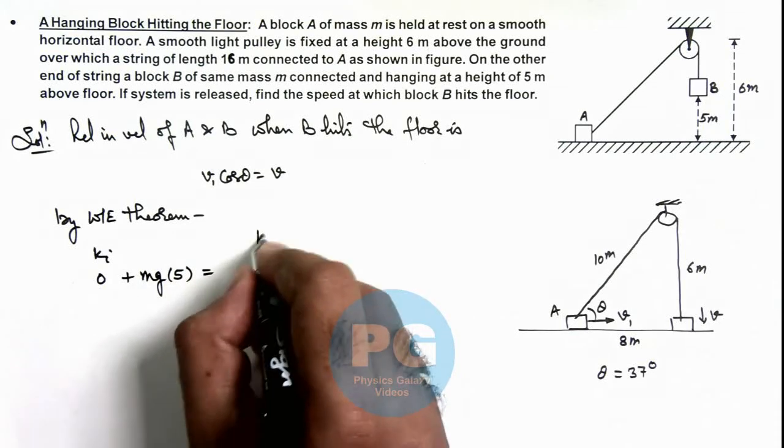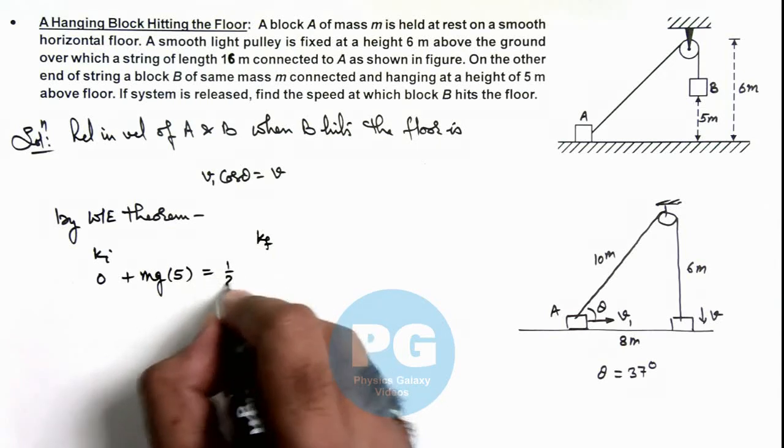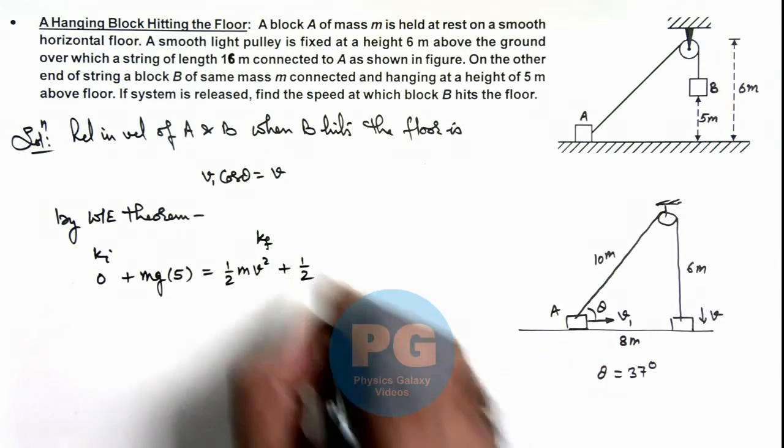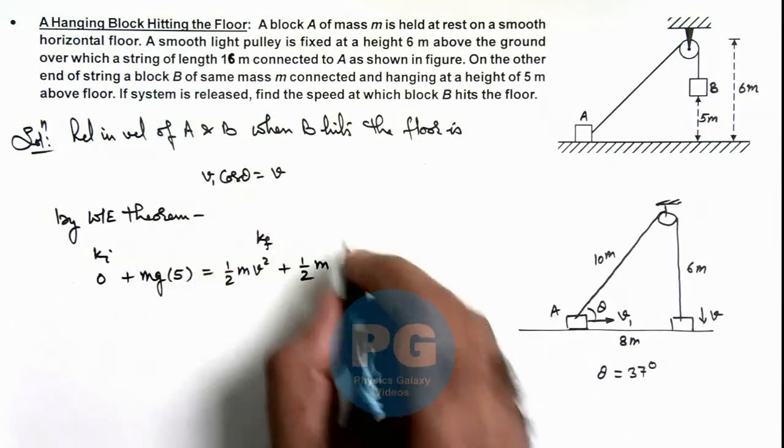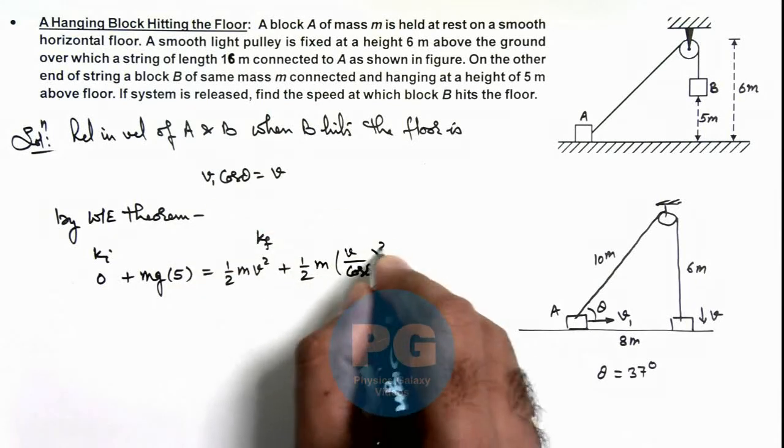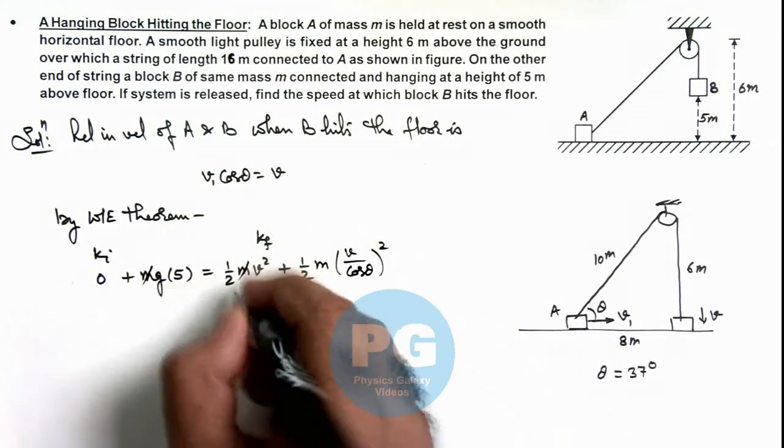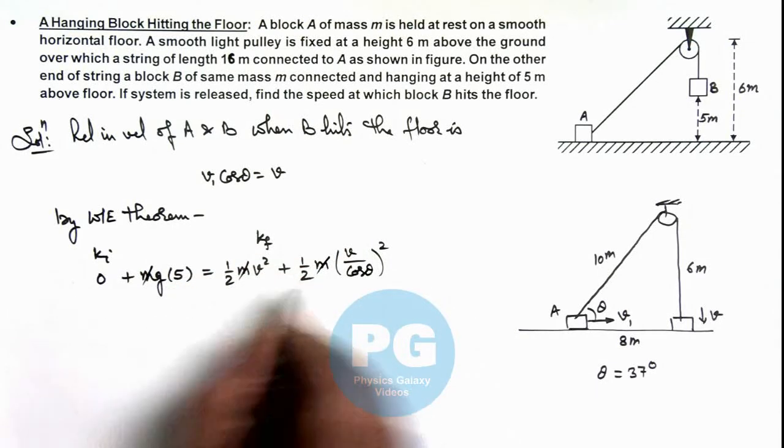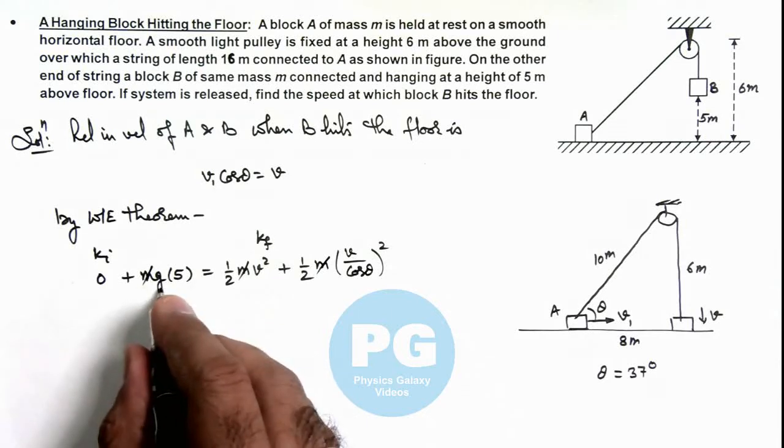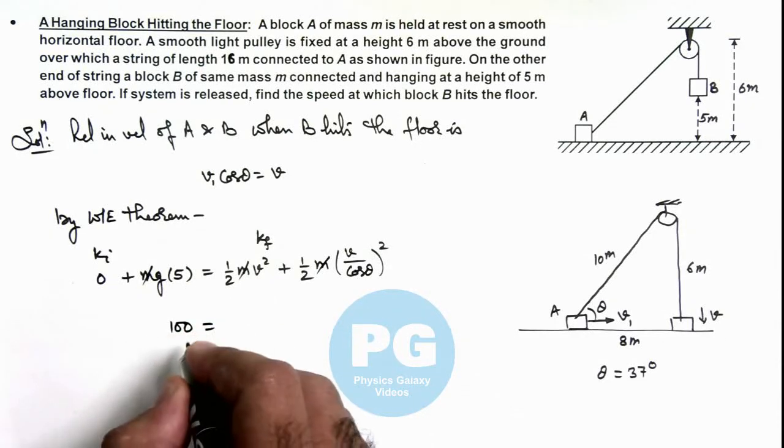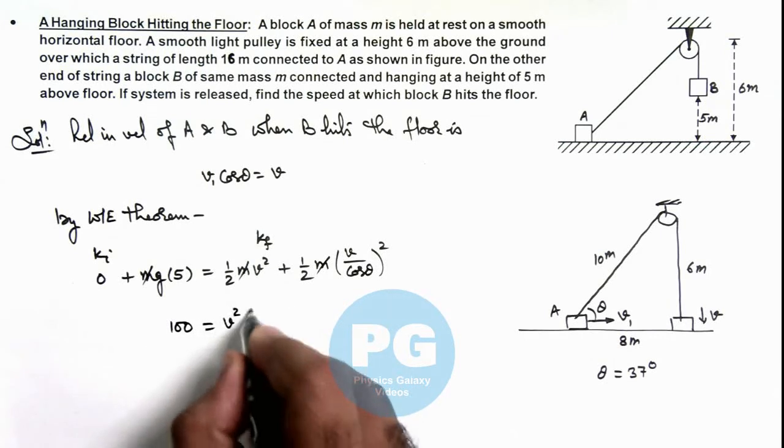This equals the final kinetic energy of the blocks: that is half m v squared for B, plus for A is half m v1 squared, that can be written as v by cos theta whole squared. Here m gets canceled out, and simplifying this will be: this 2 can also be taken here, this will be g can be taken as 10 into 10 is 100.